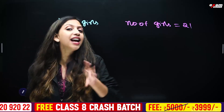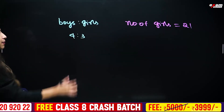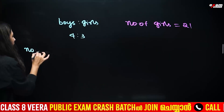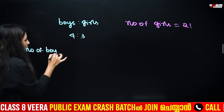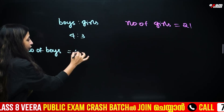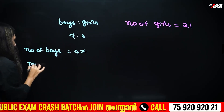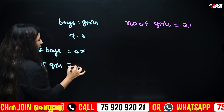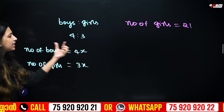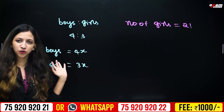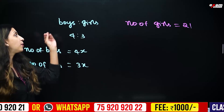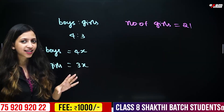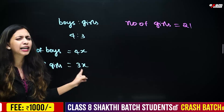The number of boys is 4x and the number of girls is 3x. How do you find x?